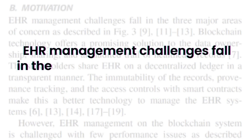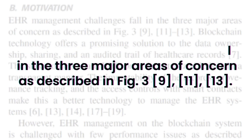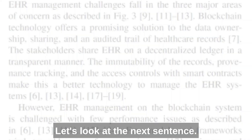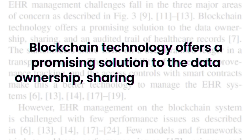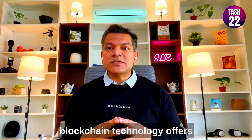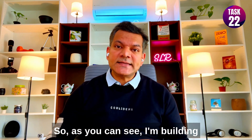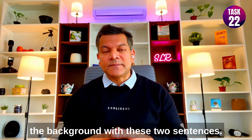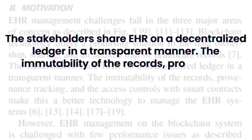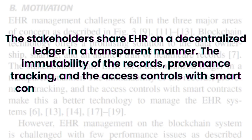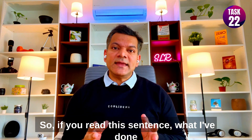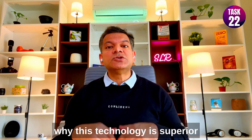The first sentence is: 'EHR management challenges fall in three major areas of concern as described in figure three.' This sentence is listing the main areas of concern. The next sentence — 'Blockchain technology offers a promising solution to the data ownership, sharing, and audit trail of healthcare records' — tells us that blockchain technology offers promising solutions. I am building the background with these two sentences. The next sentence explains that stakeholders share EHR on a decentralized ledger in a transparent manner, and that immutability, provenance tracking, and access control with smart contracts make this a better technology — providing reasons why this technology is superior.